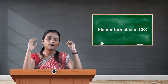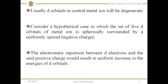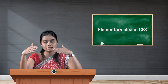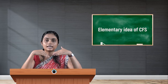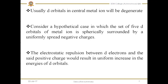Now consider a hypothetical case in which the set of 5 D orbitals of a metal ion is spherically surrounded by uniformly spread negative charges — which represent the ligands. The electrostatic repulsion between the D electrons and the positive metal ion is purely electrostatic in nature, as CFT states that the interaction between the metal ion and the ligand is between two oppositely charged particles.